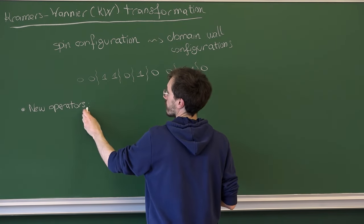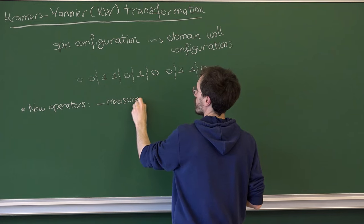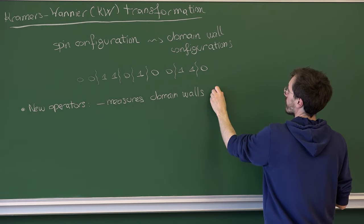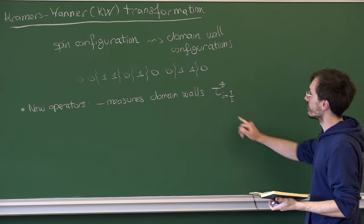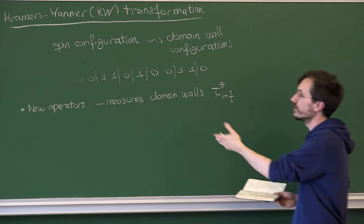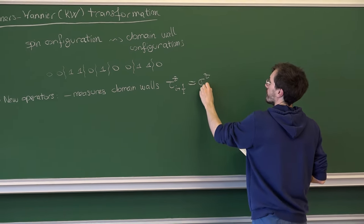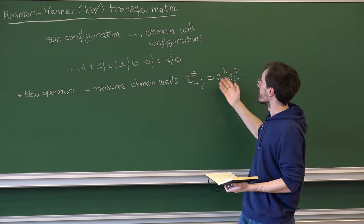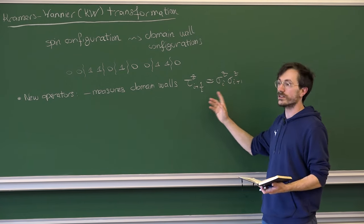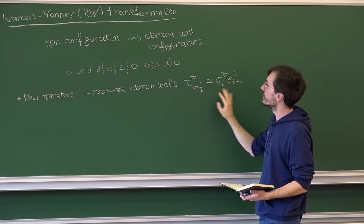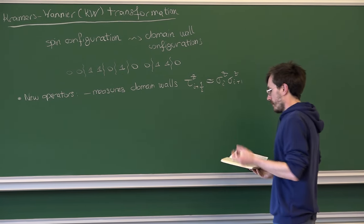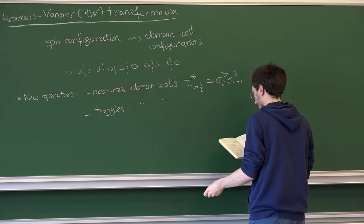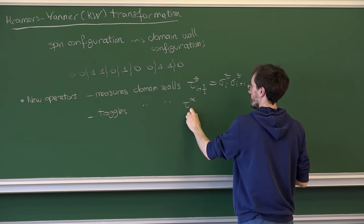The first thing I need is an operator that measures whether there is a domain wall, in the same spirit that we have an operator measuring the spin. This new operator τᶻ_{i+1/2}, acting between sites i and i+1, can be expressed in terms of the original operators as σᶻᵢ σᶻ_{i+1}. If two consecutive spins are anti-aligned there is a domain wall, so the eigenvalue of this operator is −1 whenever two consecutive spins are in different states.